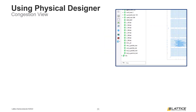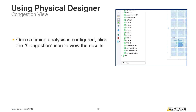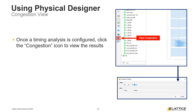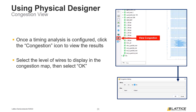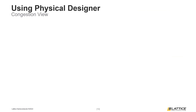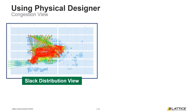Once the timing analysis settings have been configured, the congestion of a design can be viewed by clicking the congestion icon. Selecting this icon will open the congestion setting window, allowing users to determine what level of wires and pins to include in the resultant congestion observation. Once the settings have been configured, click the OK button to view the congestion of a design. There are two congestion display modes. The first display mode, called slack distribution view, displays all the worst and most critical paths in a design, color coding them to allow users to easily differentiate between the most critical paths.